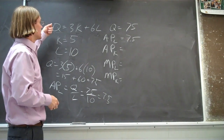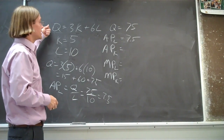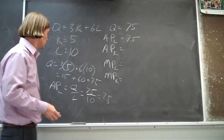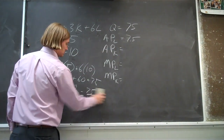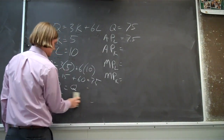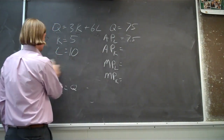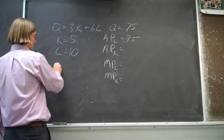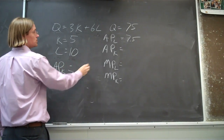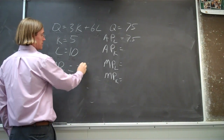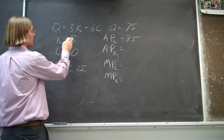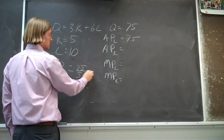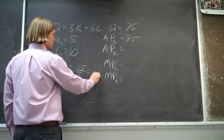The same calculation applies for capital. The average product of capital should be equal to seventy-five divided by five, so that should be fifteen.